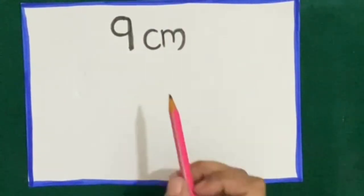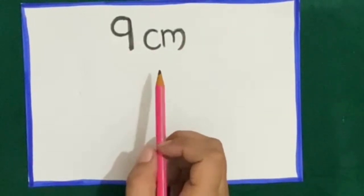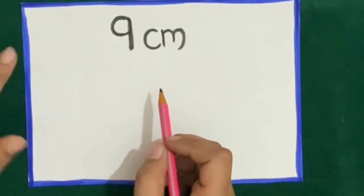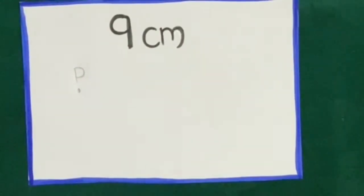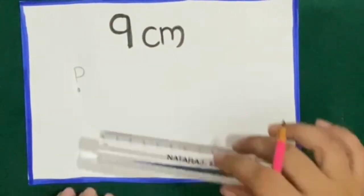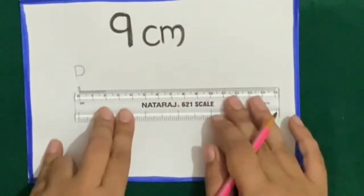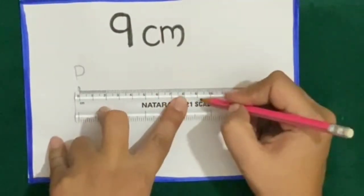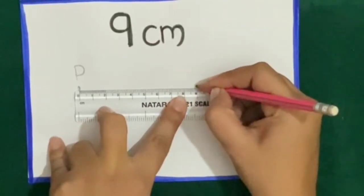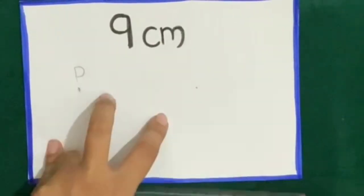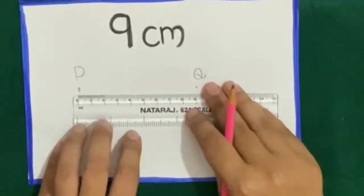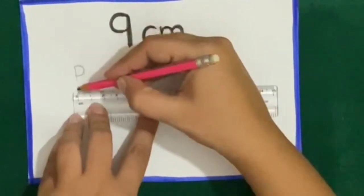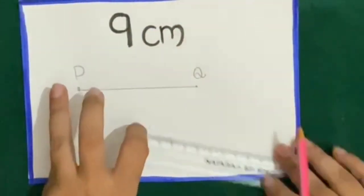Now the length given is 9 centimeters, so we have to draw a line of 9 centimeters. First we will mark a point and name it P. Then place the 0 point of the scale at point P and mark another point at 9 centimeters, naming it Q. Draw a line along the edge of the scale. This is the line of 9 centimeters.